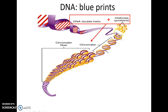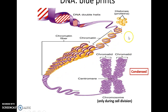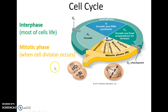DNA gets bound to histone proteins and wrapped around them to form chromatin. When cells divide, chromatin condenses to form chromosomes — two sister chromatids connected at the centromere. Chromatids only appear during cell division. The cell has an interphase, where it is alive and active performing its functions, and a mitotic phase where division occurs.